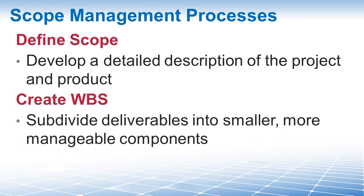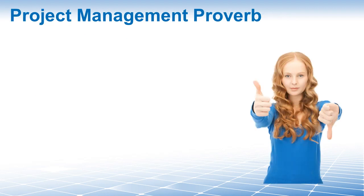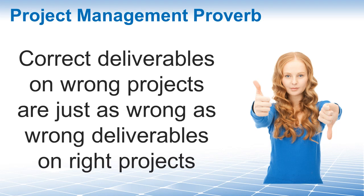Then we move on to Create WBS — the process of subdividing project deliverables and project work into smaller, more manageable components. By applying decomposition to your scope, you will break up the work into manageable pieces and document the result in the work breakdown structure, the WBS. Any project must be broken down into manageable sequences — called work packages — in order to prevent it from descending into chaos. You'll refer to the project scope statement to optimize your WBS process. And while we are talking about project deliverables, here is a project management proverb: correct deliverables on the wrong project are just as wrong as the wrong deliverables on the right project.